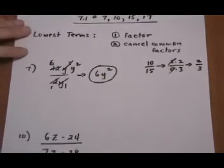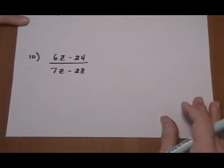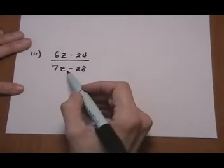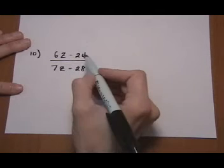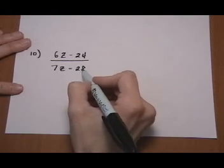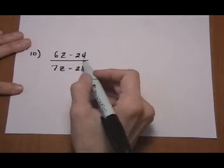And the next one, 6z minus 24 over 7z minus 28. First step we want to do is to factor. So we don't want to hop in and do any kind of canceling. Like right here, 28 and 24. We could divide both of those by 2 if we wanted to. Or by 4.